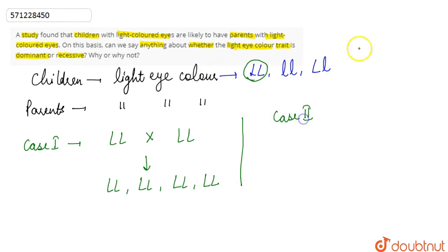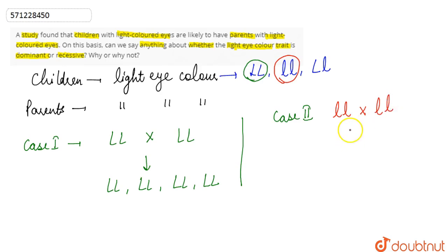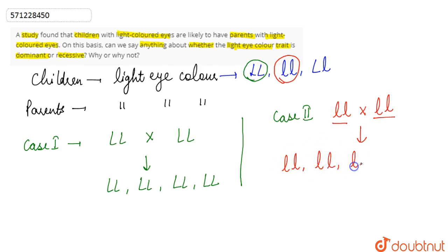In Case 2, if the child has the genotype small l small l for light eye color, then both parents will also have the same small l small l genotype — both recessive alleles. Only then will all the progenies have the light eye color.